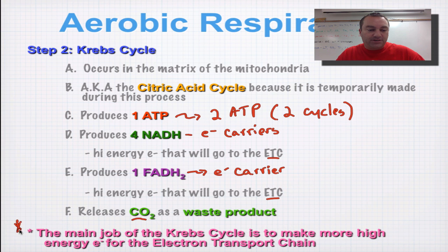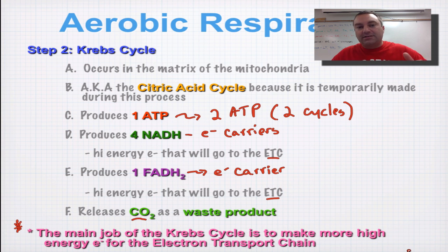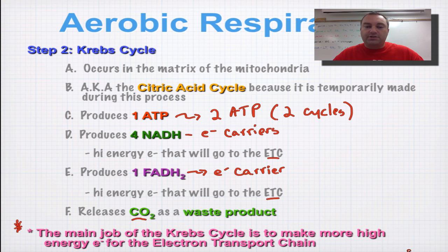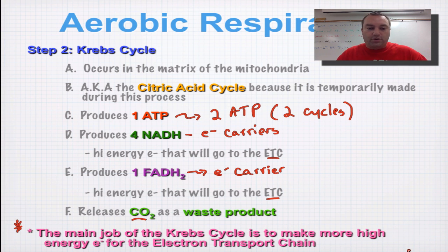The main job of the Krebs cycle is to make lots and lots of high-energy electrons for the electron transport chain, because the electron transport chain is going to make the bulk of the ATP from this chemical process.